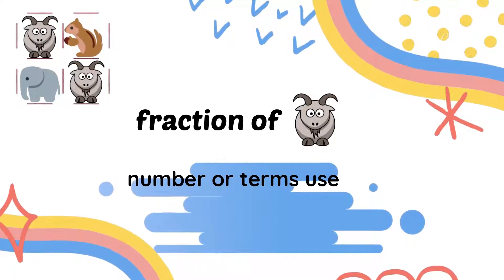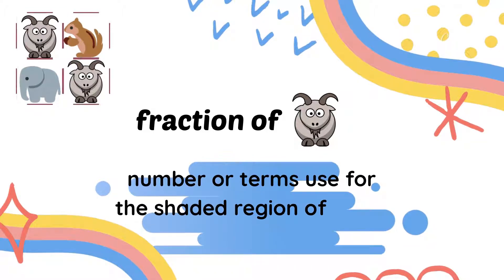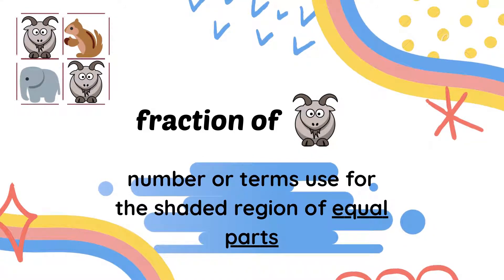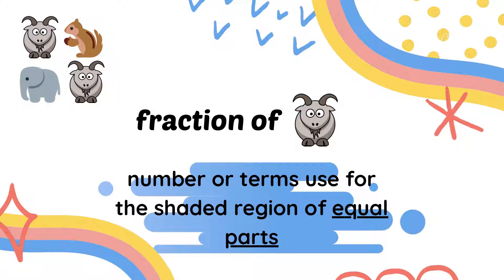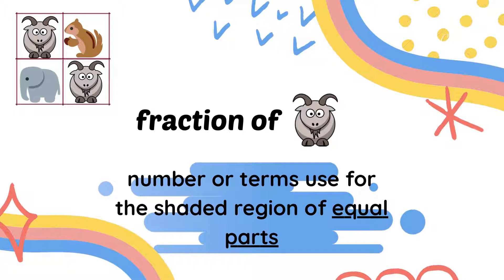How about the fraction of a goat? This means the number or terms used for the shaded region of the equal parts — the region that is wanted. Fraction maksudnya kita kena cari apa fraction untuk gambar kambing tu. Berapa shaded region untuk gambar kambing. Ada berapa bahagian yang mempunyai gambar kambing daripada keempat-empat bahagian tu.